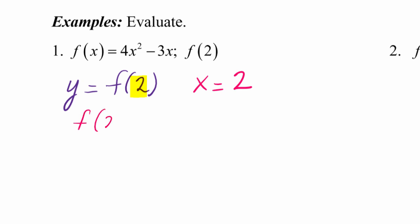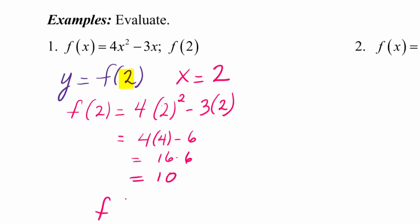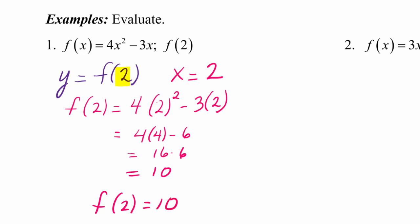f of 2 is going to be equal to 4 times 2 squared minus 3 times 2. The value inside these parentheses is your x value. When they're asking you to evaluate f of 2, they want you to find the y value that corresponds to that x value. Using our order of operations, f of 2 is 10. In this notation, you know that the graph of this function will have the ordered pair (2, 10).